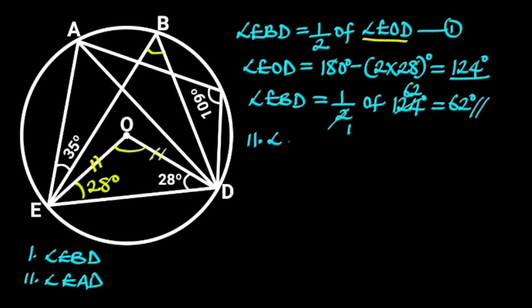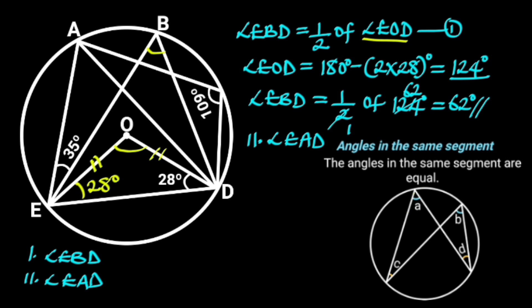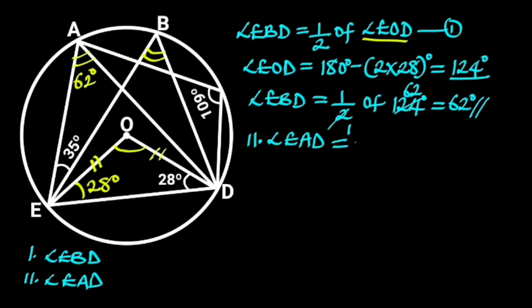To find angle EAD, we are going to use two methods. The first method is to recall the circle theorem of angles in the same segment: angles in the same segment are equal. Considering the figure, A is in the same segment with B, and C is in the same segment with D. From the theorem, angle EAD is in the same segment with angle EBD. Hence, angle EAD is 62 degrees.